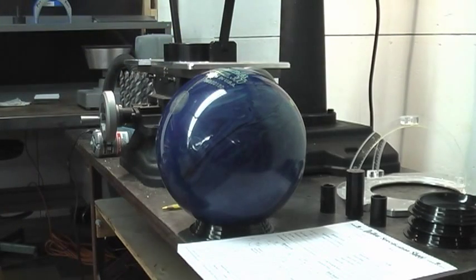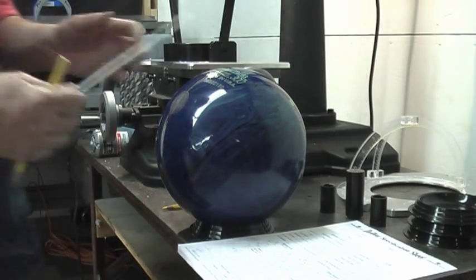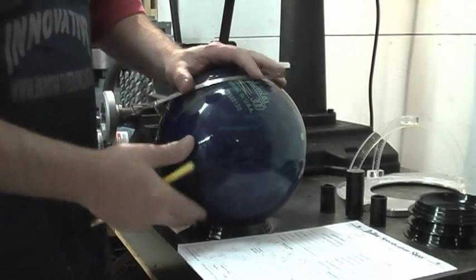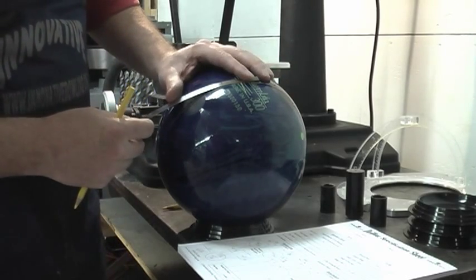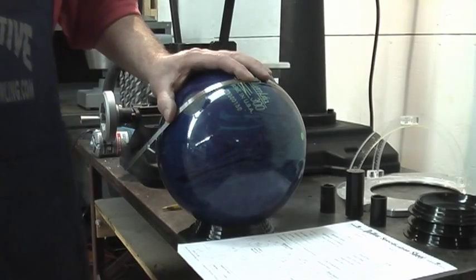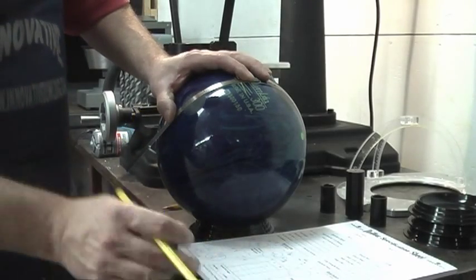And I'm going to measure backwards from the center of the span to locate where the thumb hole is going to be, because on this ball I'm going to drill the thumb hole first.